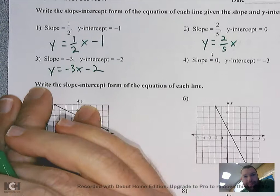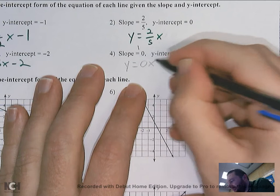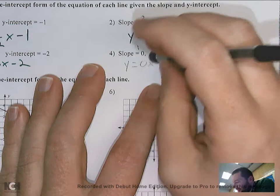This one — the slope is zero, so it would be zero x minus three. What's zero times any number? It's zero. So the zero x term goes away.